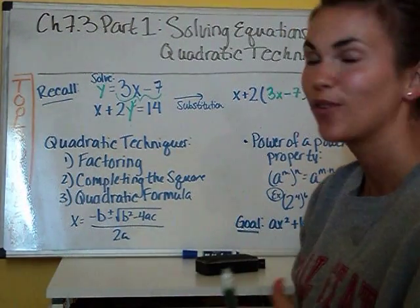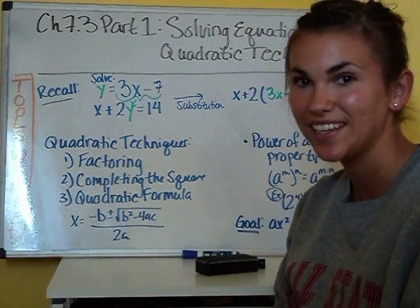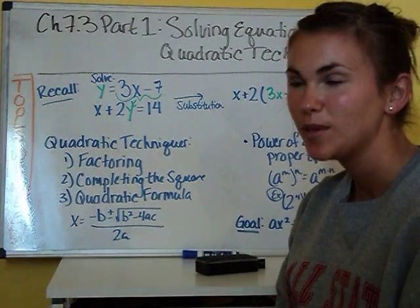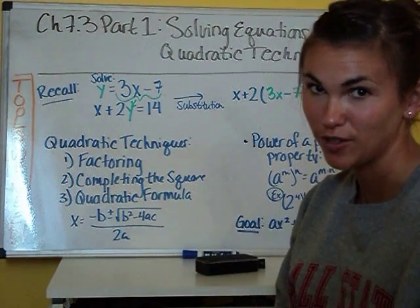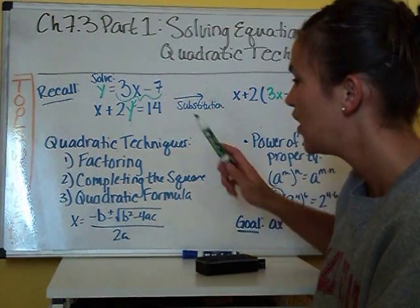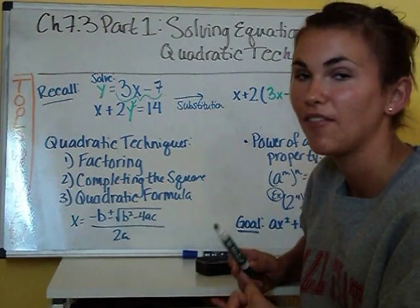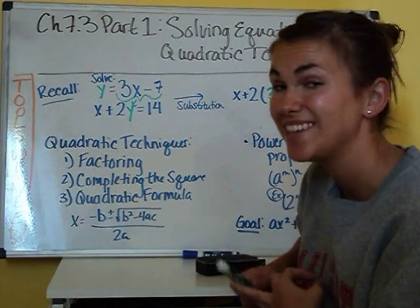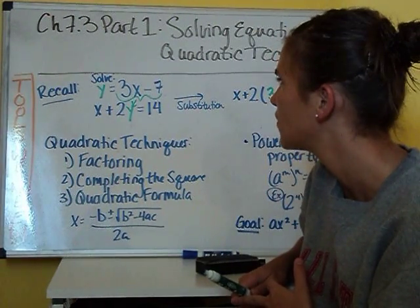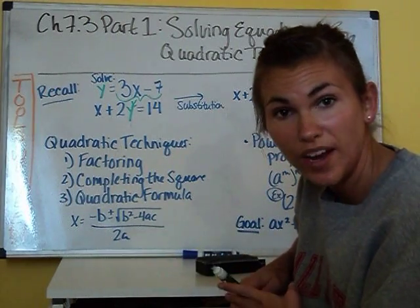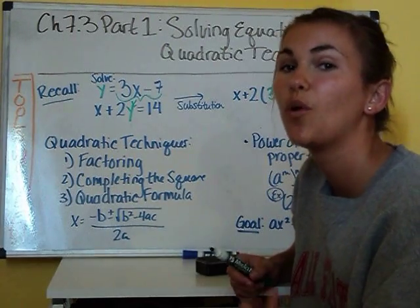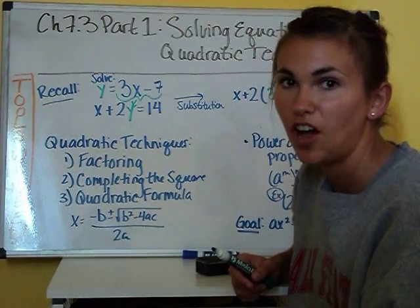The other thing we're going to need to know is our quadratic techniques — this is what we spent the entire last chapter talking about. We have three different types: factoring, which includes product-sum factoring, AC factoring, grouping, difference of two squares, and difference of two cubes. All these different types of factoring techniques we're going to be using to solve equations.